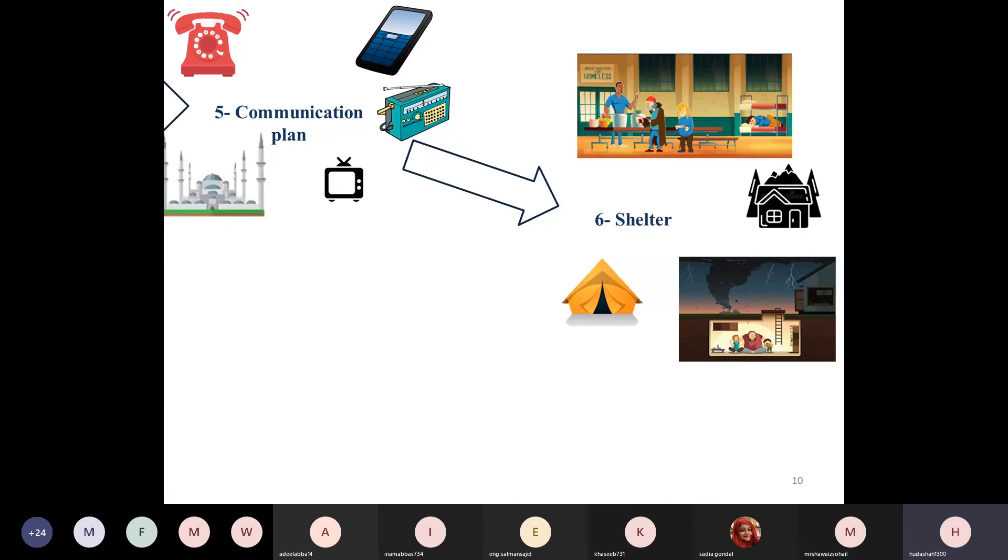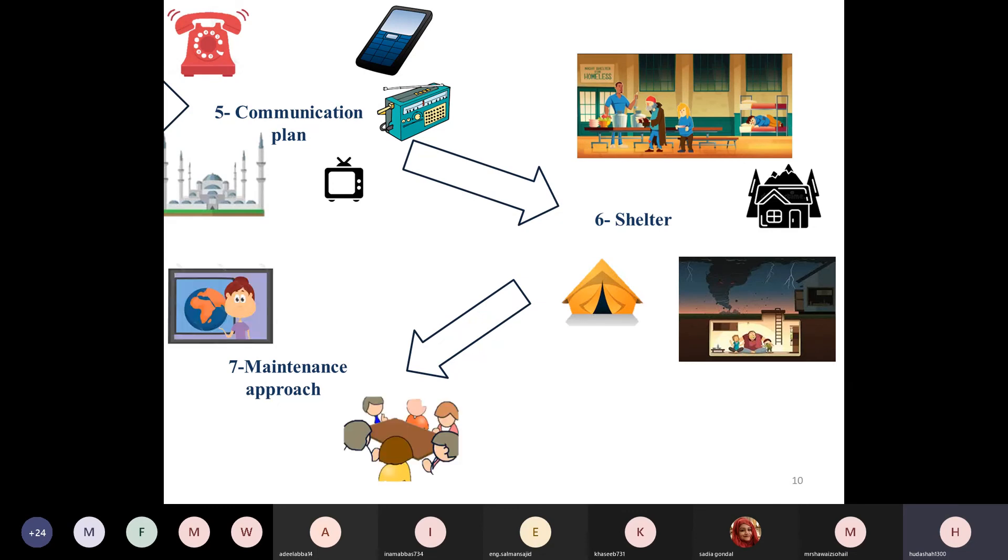Number seven and the most important step is the maintenance approach, in which you review and update your plan. How? By updating yourself with a weather forecast or news channel, holding meetings with your family to review your plan, keeping a pill reminder planner so that you can refill your medical stock, and obviously this MOOC so that you can have a detailed analysis on the personal preparedness plan.